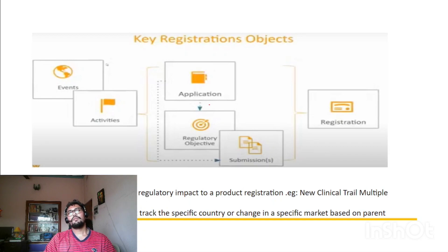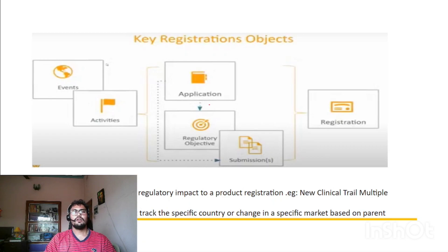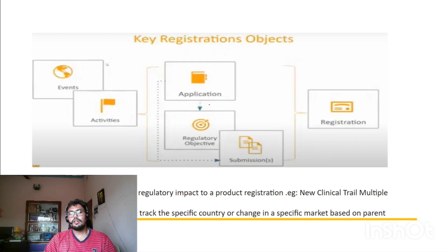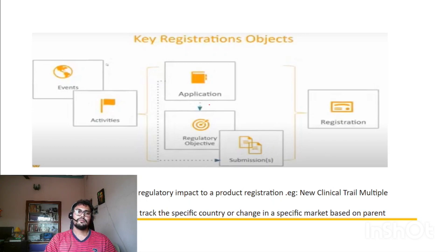An event represents a product modification or drug product change that is needed. Events are classified as either a global event or a local event based on country. Under the event, the activities that need to be performed are captured. Application is a centralized folder where you can track event, activity, regulatory objective, submission, and registration. Regulatory objective is for submission — the submission that needs to be sent to the health authority — and for a specific submission there are a couple of regulatory objectives. That's how the flow works.